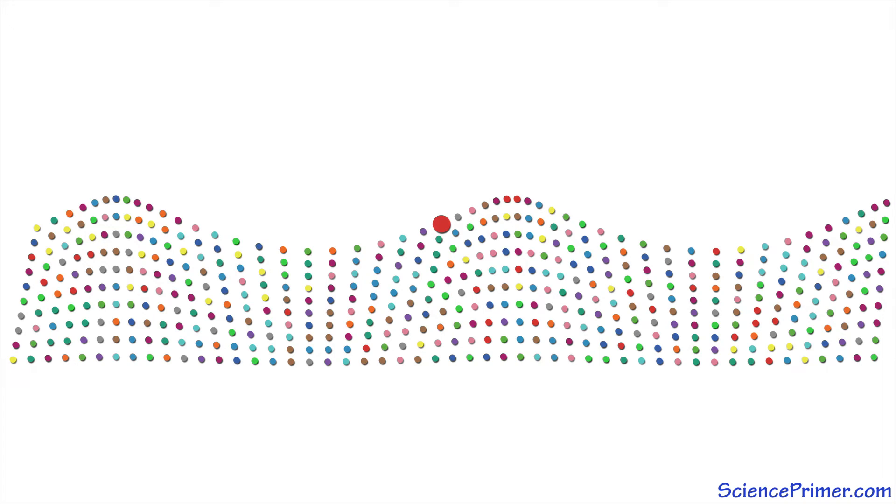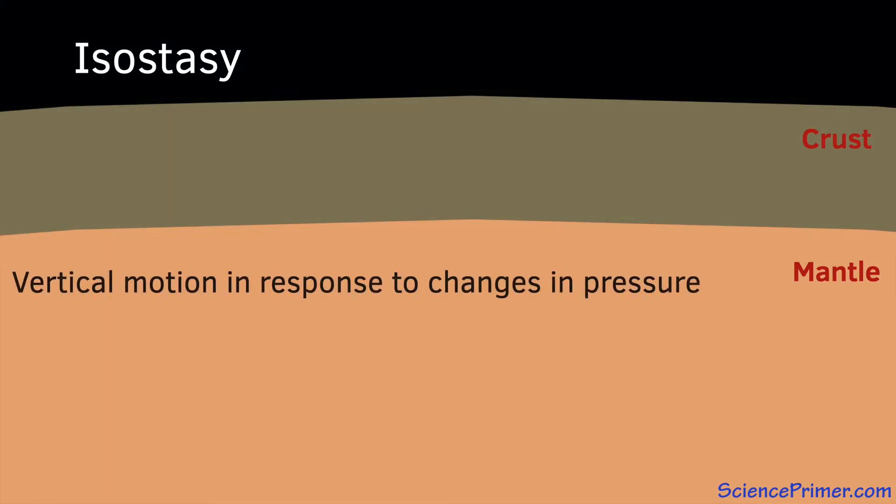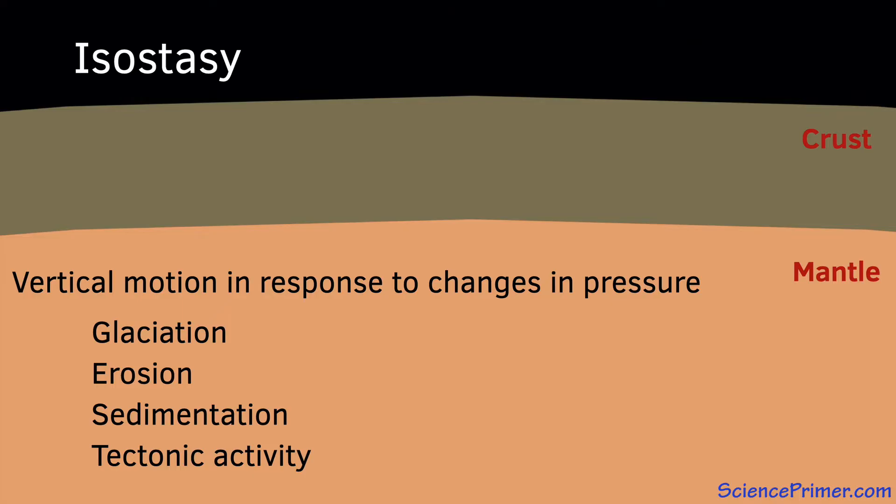Isostasy describes vertical motion of the earth's crust in response to changes in pressure due to climatic events such as glaciation, erosion, or sedimentation, and to tectonic activity such as the process of mountain formation.